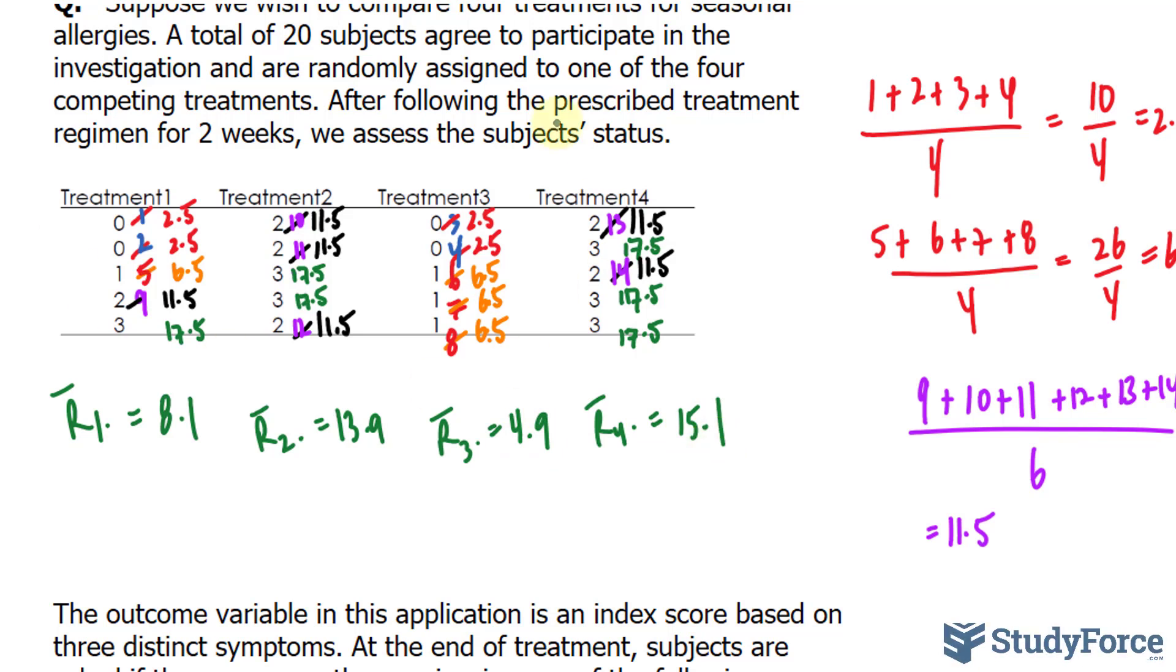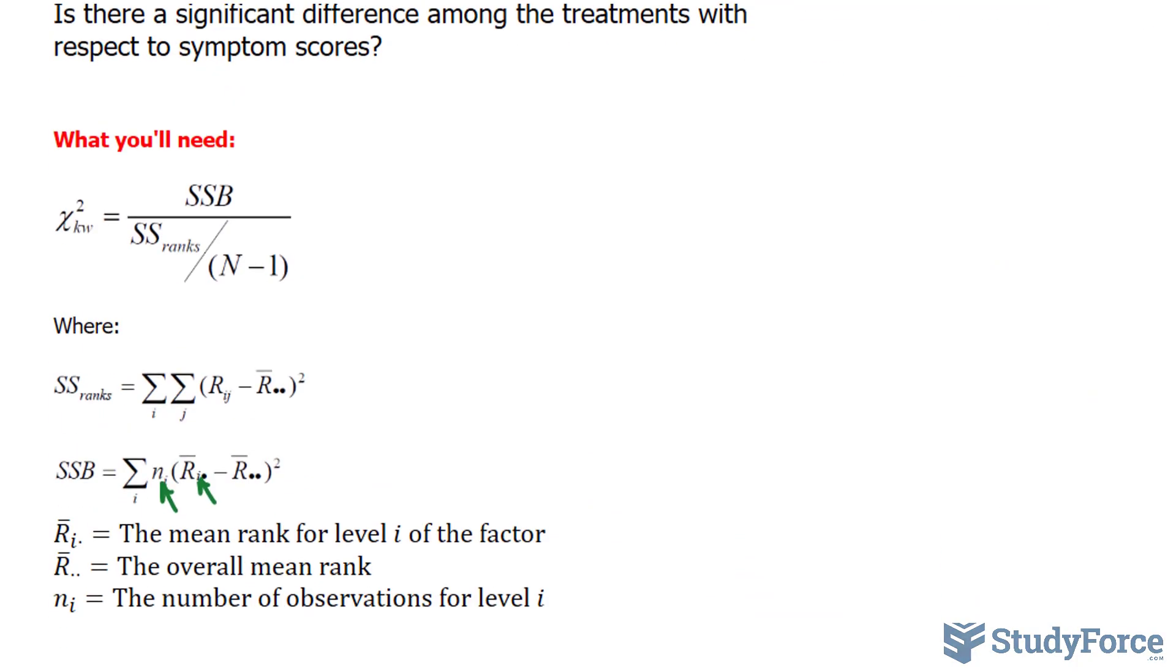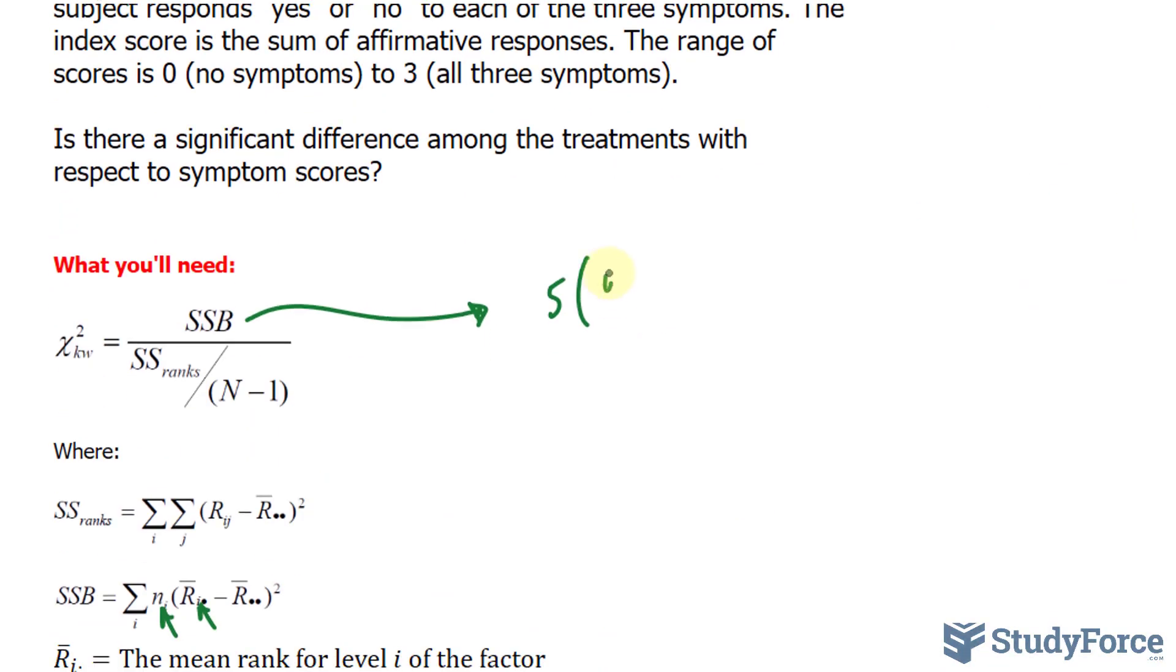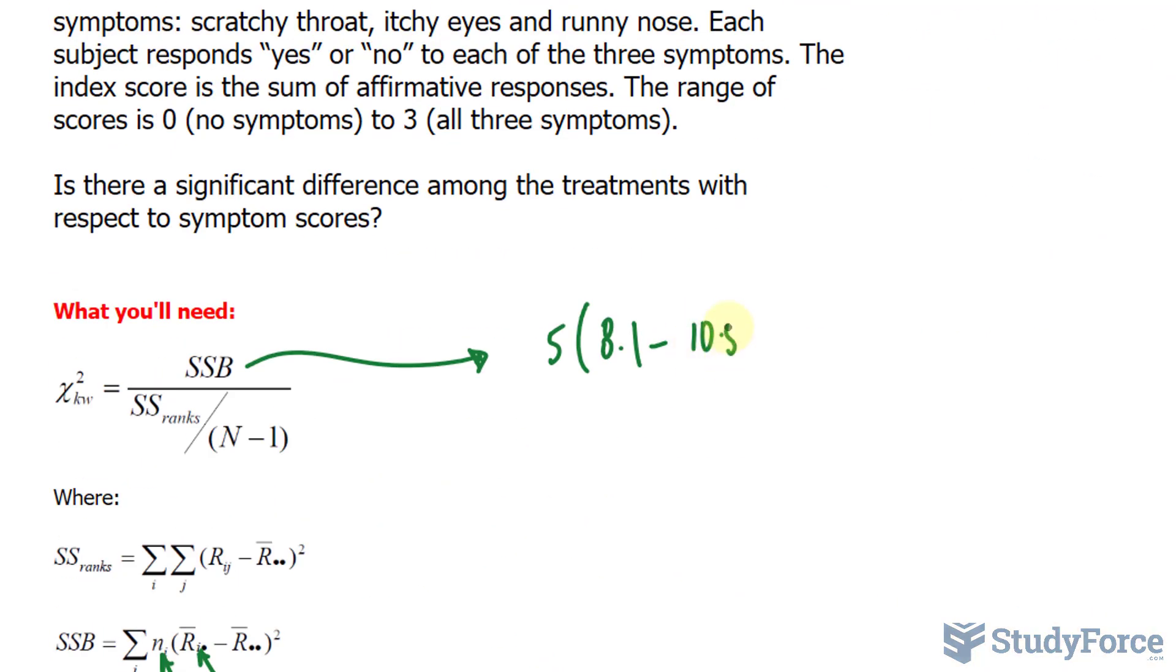The total sum, if we add all these ranks and divide by 20, will give you a value of 10.5. So now, to calculate this value, I'll write down 5 times 8.1 minus the total average, 10.5, and raise that to the power of 2.